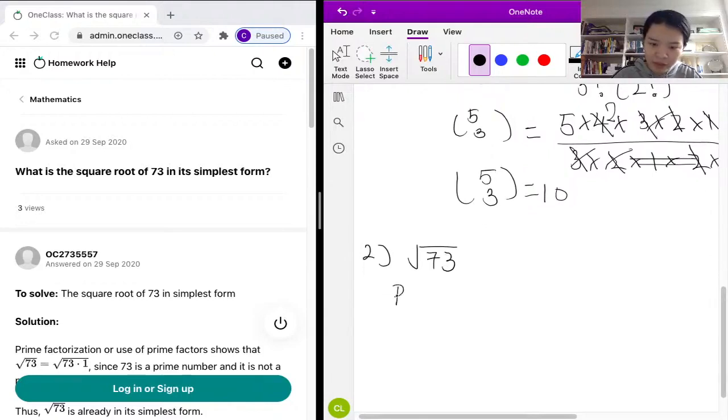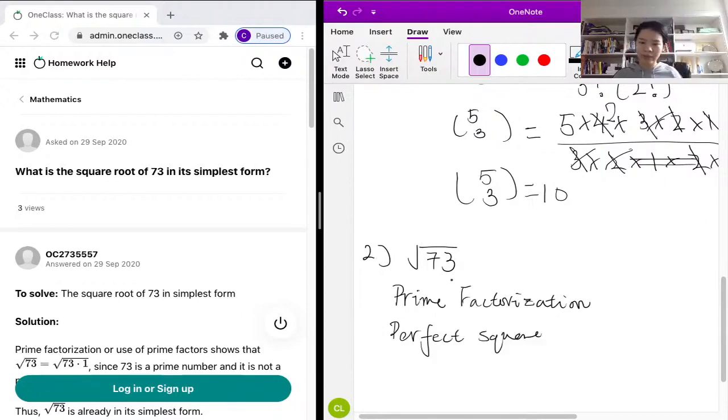We use prime factorization and we check whether this number 73 is a perfect square. So first we found that we know that 73 is not a perfect square because it's not in the list of perfect squares.